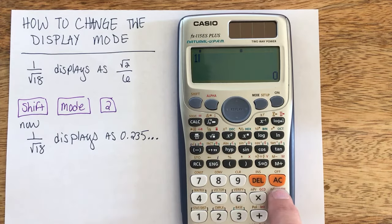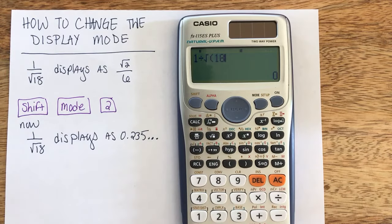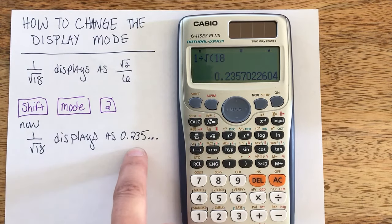So if I now type 1 divided by the square root of 18, I don't see the simplified radical form, instead I've got the decimal value right away.